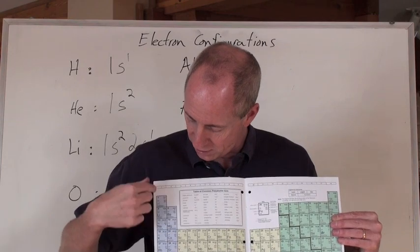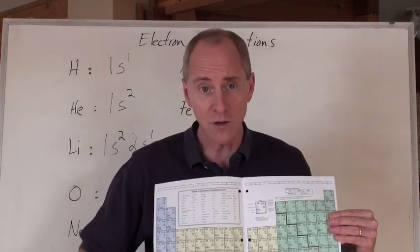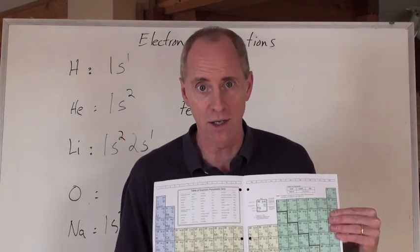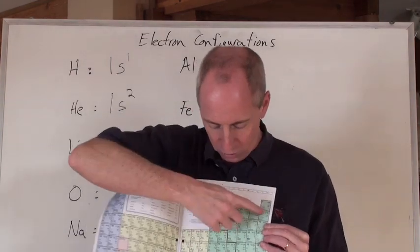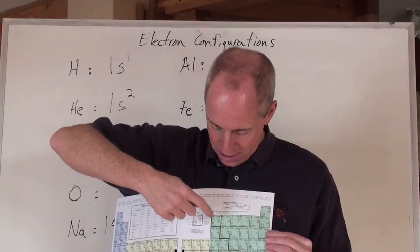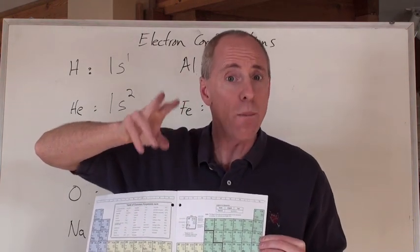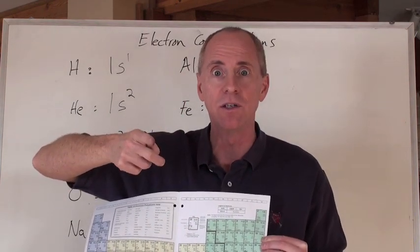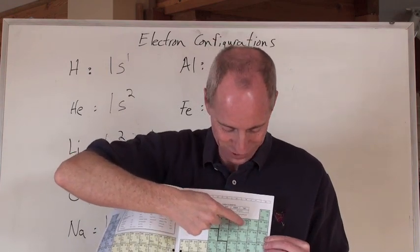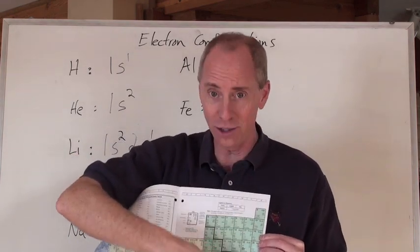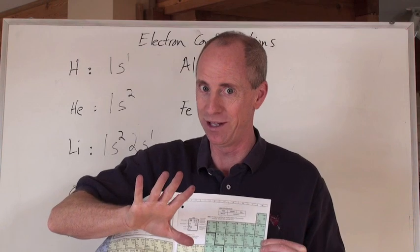This blue block right here on the periodic table, which is the alkali metals and the alkali earth metals, that's your S block. See this green block right over here on this periodic table? This is your p block. P's have how many maximum electrons? 6. 1, 2, 3, 4, 5, 6 columns going down. This is cool.